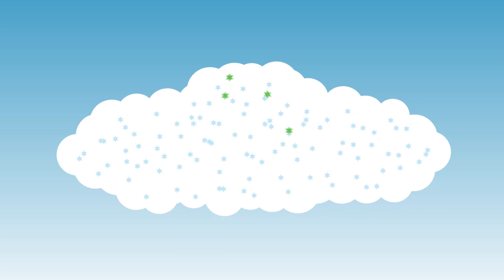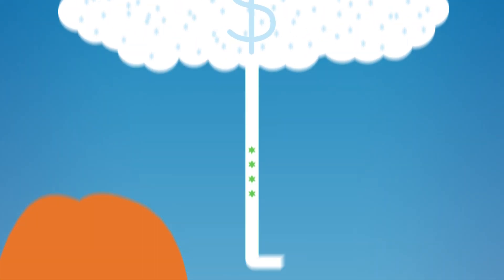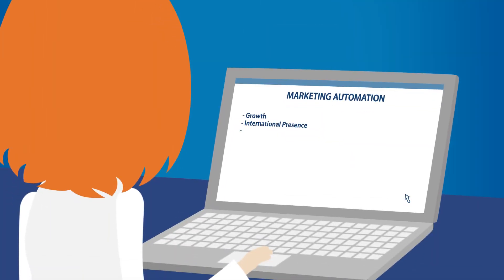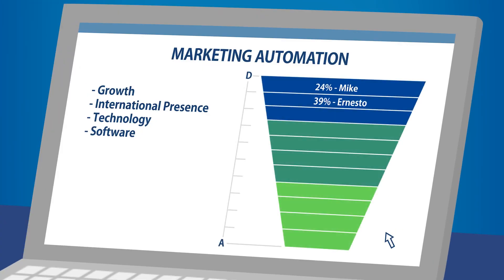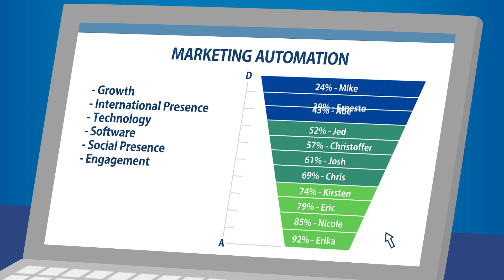And instead of using guesswork, their data engine analyzes all of that data to discover patterns and learn which lead attributes actually predict buying behavior. They use that model to score each lead with a number that represents their likelihood to buy. Plus, this lead scoring model updates according to new data.